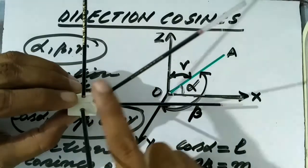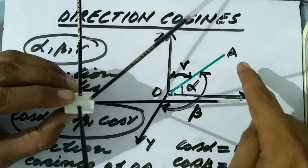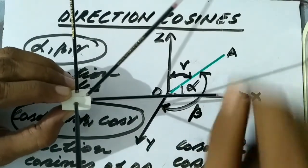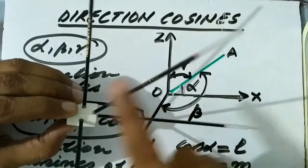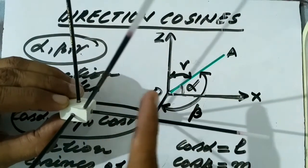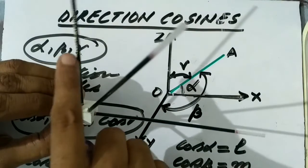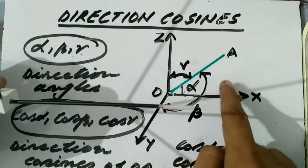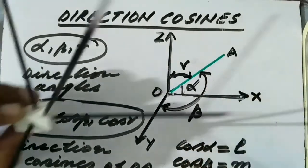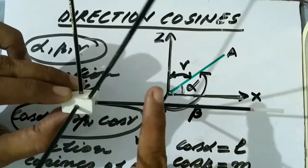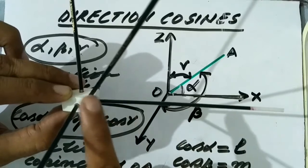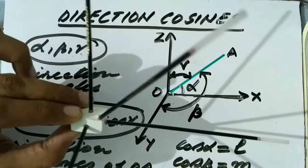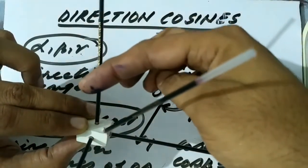This is the line OA as shown in the figure in green. OA is a straight line that is not on the plane ZOX but in space, making some angle with the x-axis, some angle with the y-axis, and some angle with the z-axis. Suppose OA makes angle alpha with the x-axis, beta with the y-axis, and gamma with the z-axis.